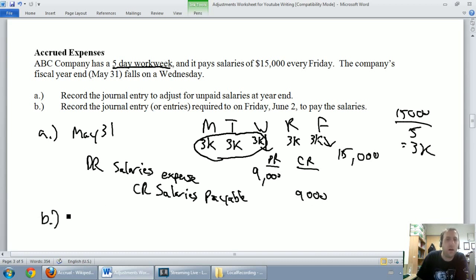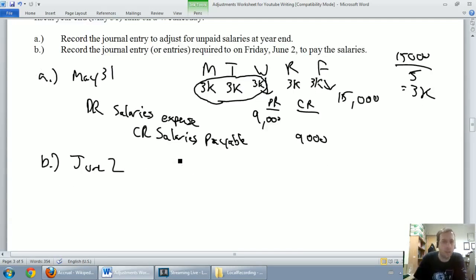Let's look at part B. Part B says record the journal entry required on Friday, June 2nd. So it's June 2nd to pay the salaries. First of all, how much did I pay? I pay the full amount. The employees should be blissfully unaware of our fiscal year end as far as their salaries go. I don't know my university's fiscal year end, I don't care - I know my payday. So I'm gonna credit cash for just the normal amount, $15,000. This is just a normal payday for our employees.